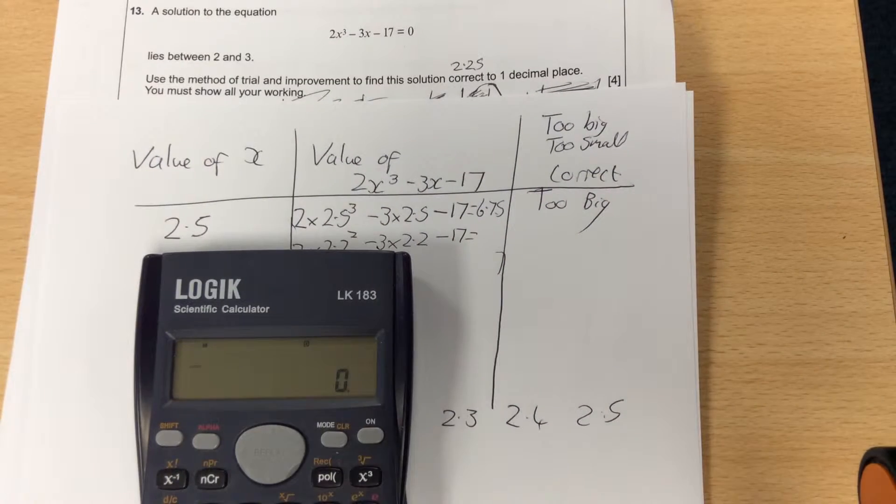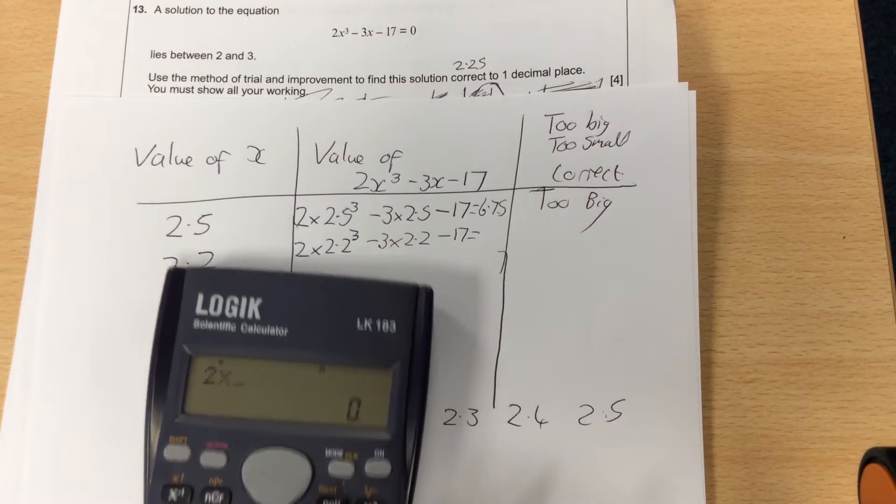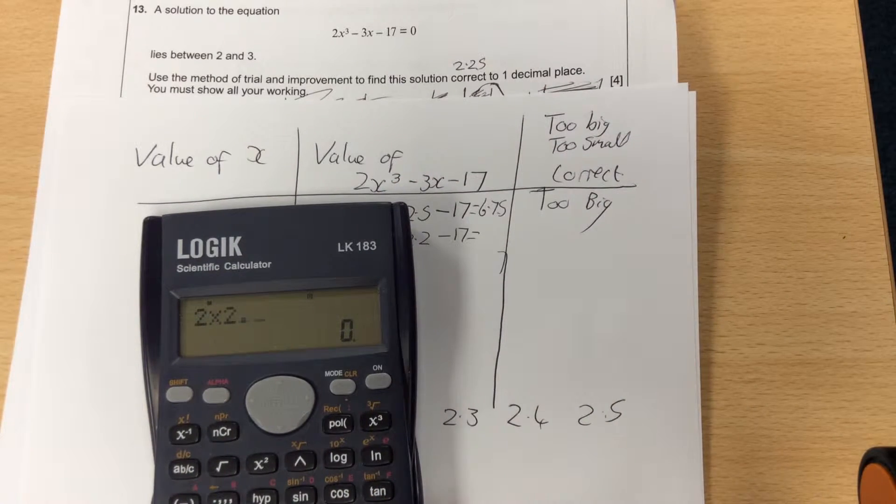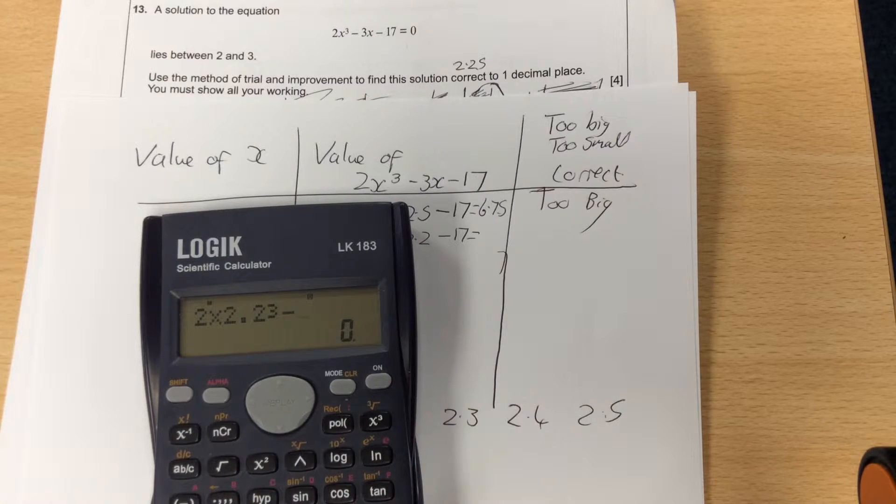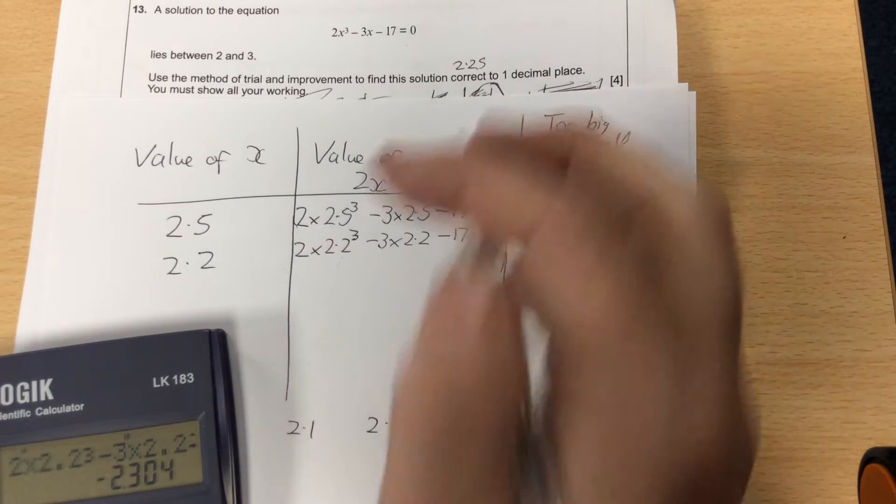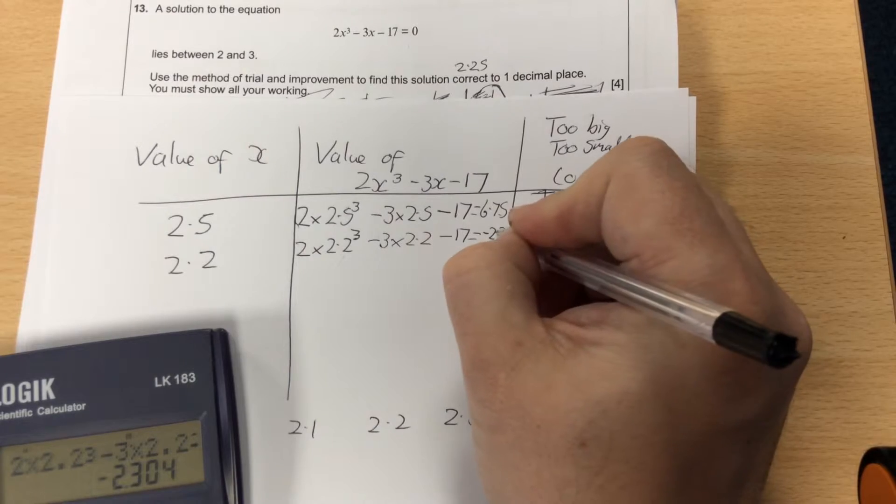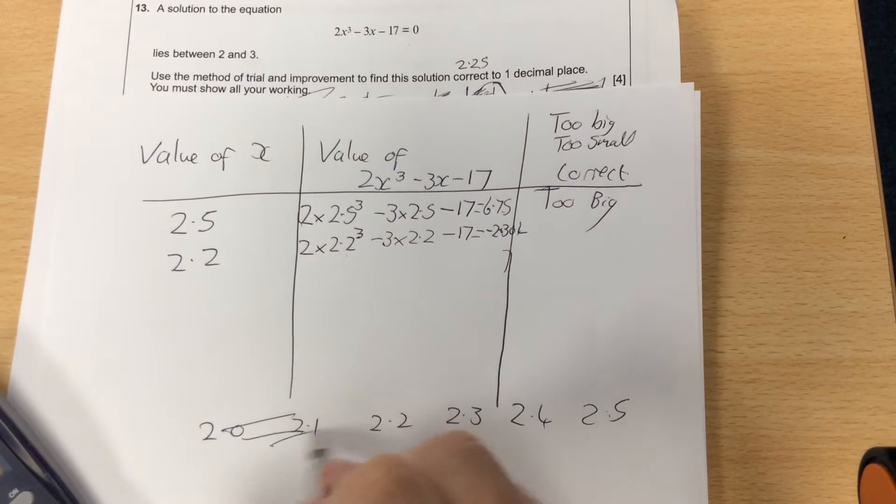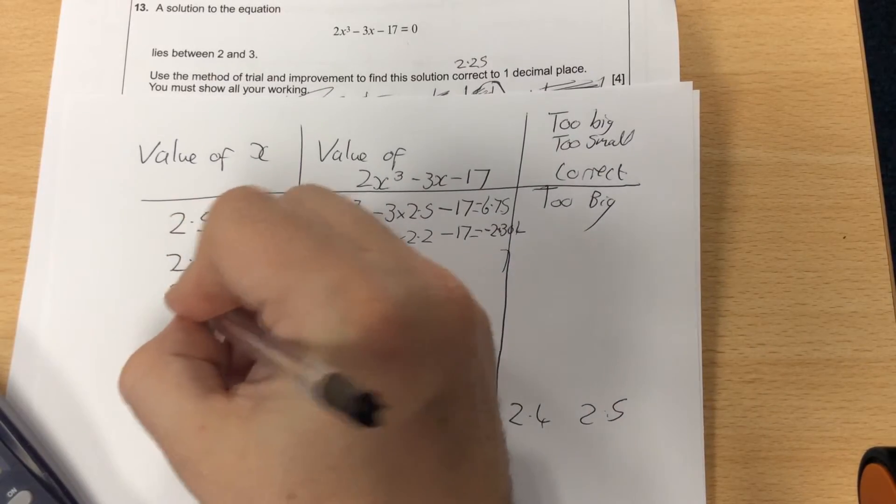When I type this into my calculator, there's 2 times 2.2³, so it's 2 times 2.2, and then I'll press the x³ button, take away 3 times 2.2, take away 17. That one comes up as -2.304, which means now it's between 2.2 and 2.5.